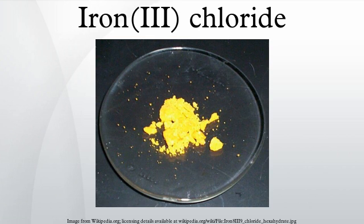Dissolving iron ore (Fe3O4) in hydrochloric acid: Fe3O4(s) + 8HCl(aq) → FeCl2(aq) + 2FeCl3(aq) + 4H2O.